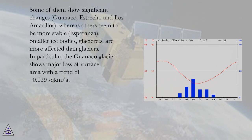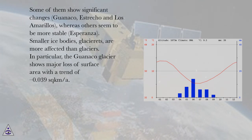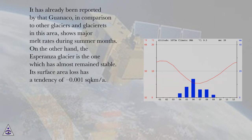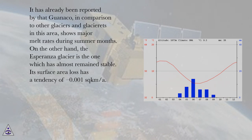Smaller ice bodies, i.e., glacier rays, are more affected than glaciers. In particular, the Guanaco glacier shows major loss of surface area with a trend of minus 0.039 sq km/year. It has already been reported that Guanaco, in comparison to other glaciers in this area, shows major melt rates during summer months. On the other hand, Esperanza glacier is the one that has almost remained stable, with a surface area loss tendency of minus 0.001 sq km/year.